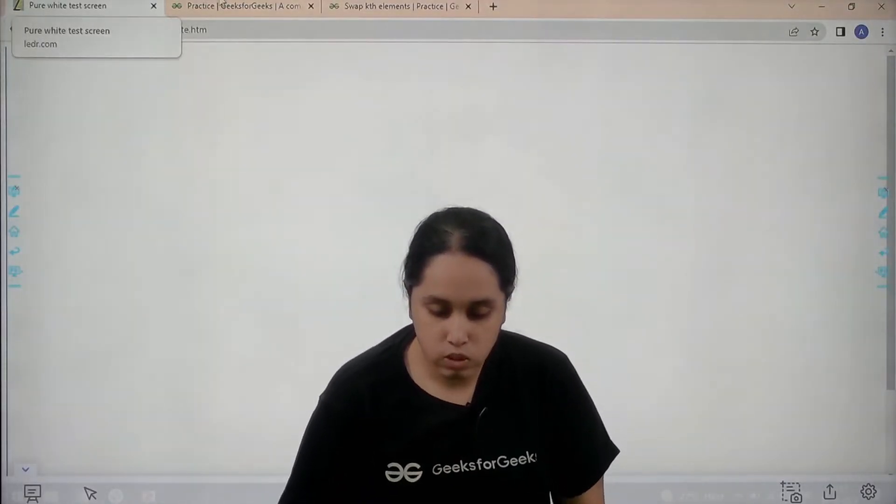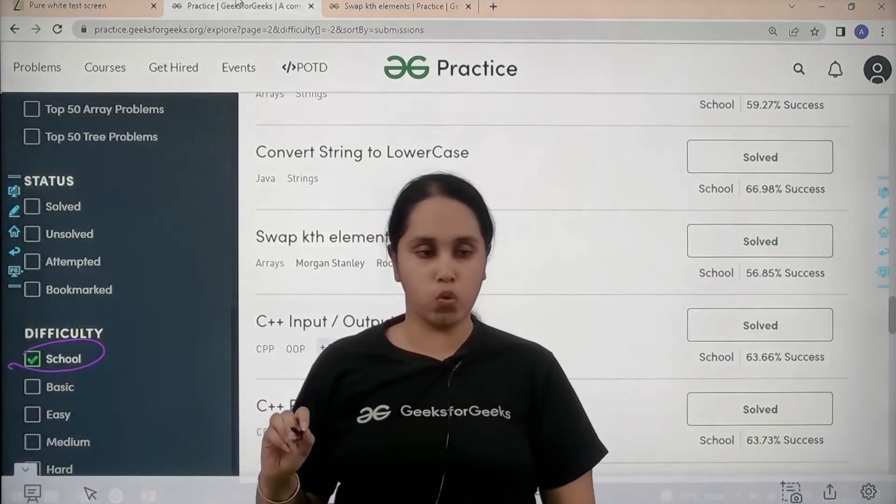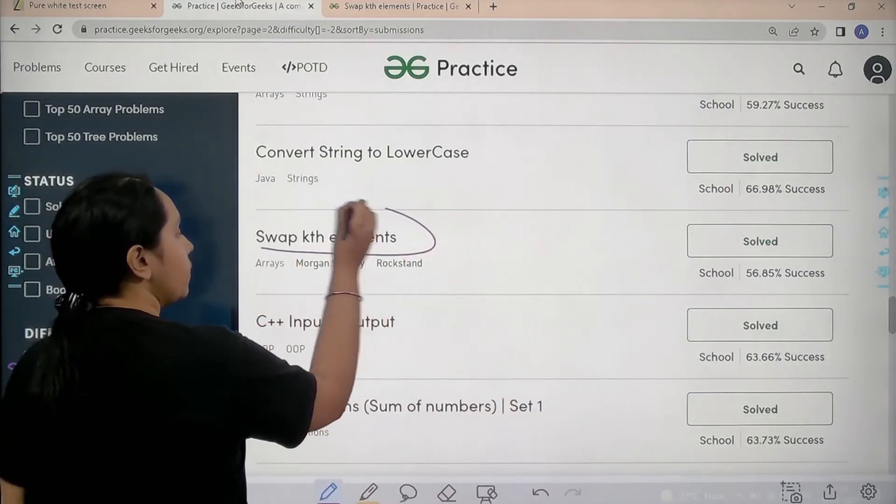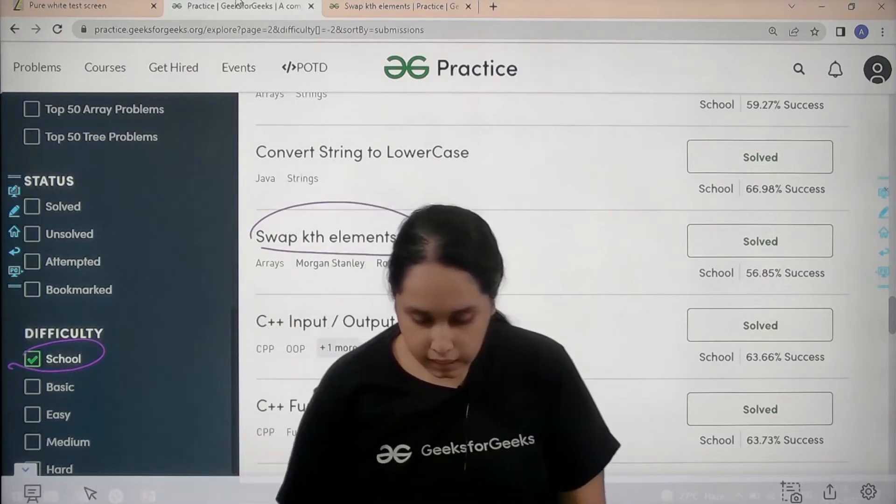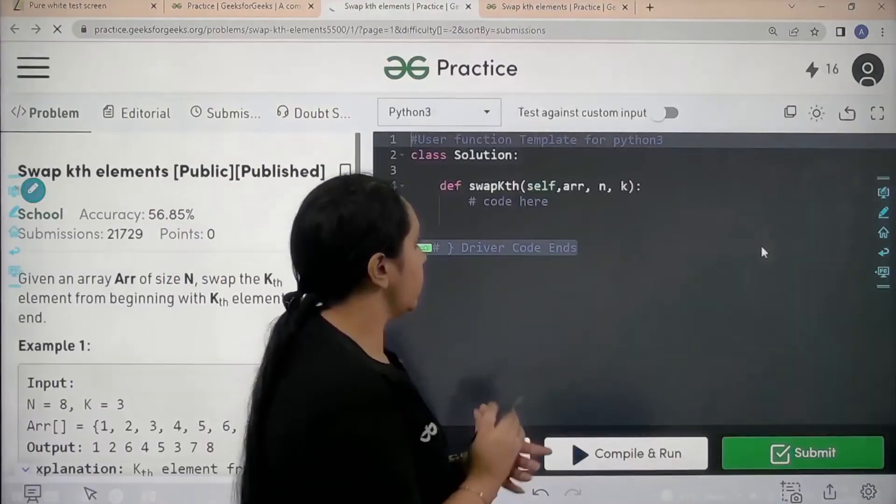So now guys, you need to go to the practice portal. In practice portal you need to choose school. Then you need to find the problem swap the k element. Then you just need to click on solve. So it's opening.